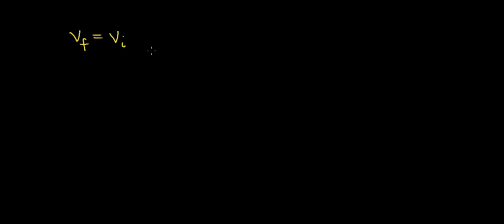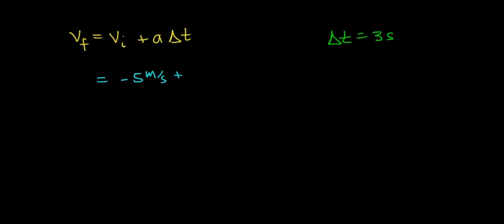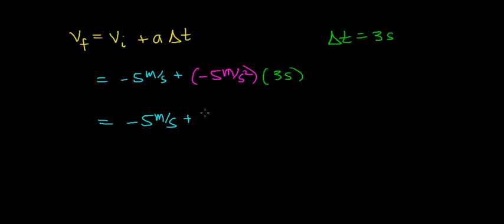I'd like to do one last example with this problem. From the previous video, the final velocity equals the initial velocity plus the acceleration times the time interval. Let's find how fast this car is going after 3 seconds. The initial velocity is negative 5 meters per second, plus negative 5 meters per second squared times 3 seconds. Negative 5 times 3 gives negative 15, and adding negative 5 plus negative 15 gives us negative 20 meters per second.